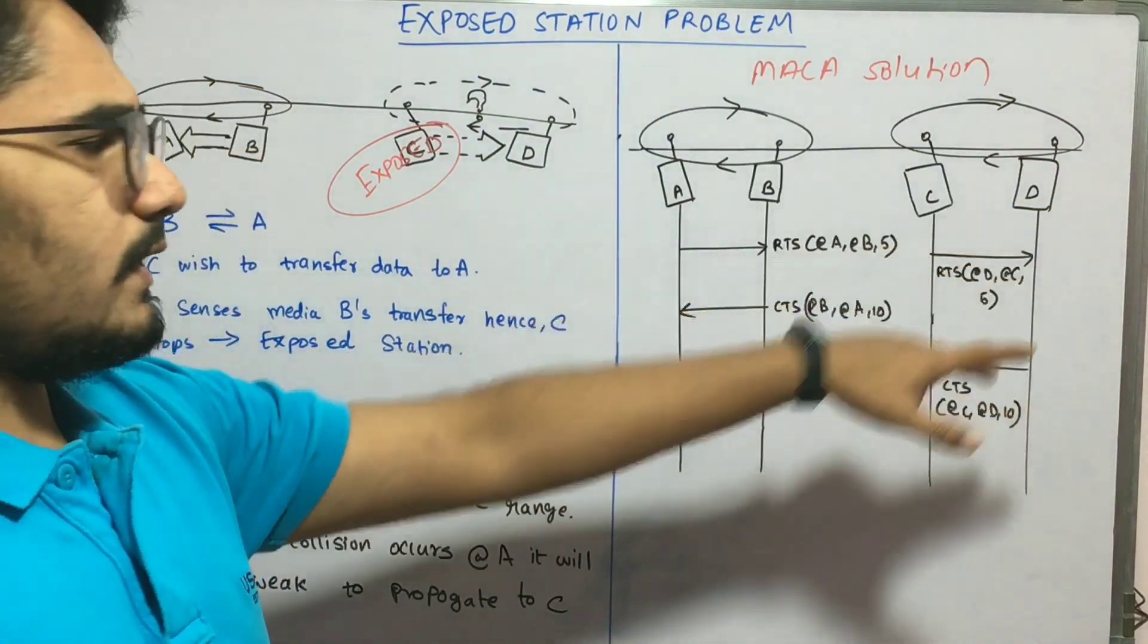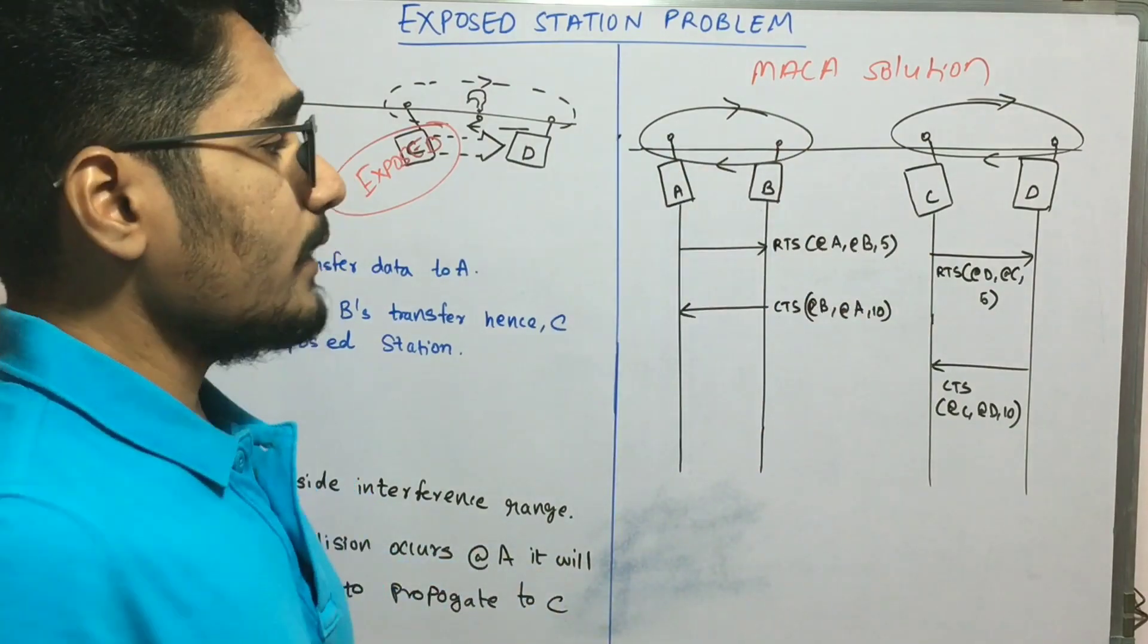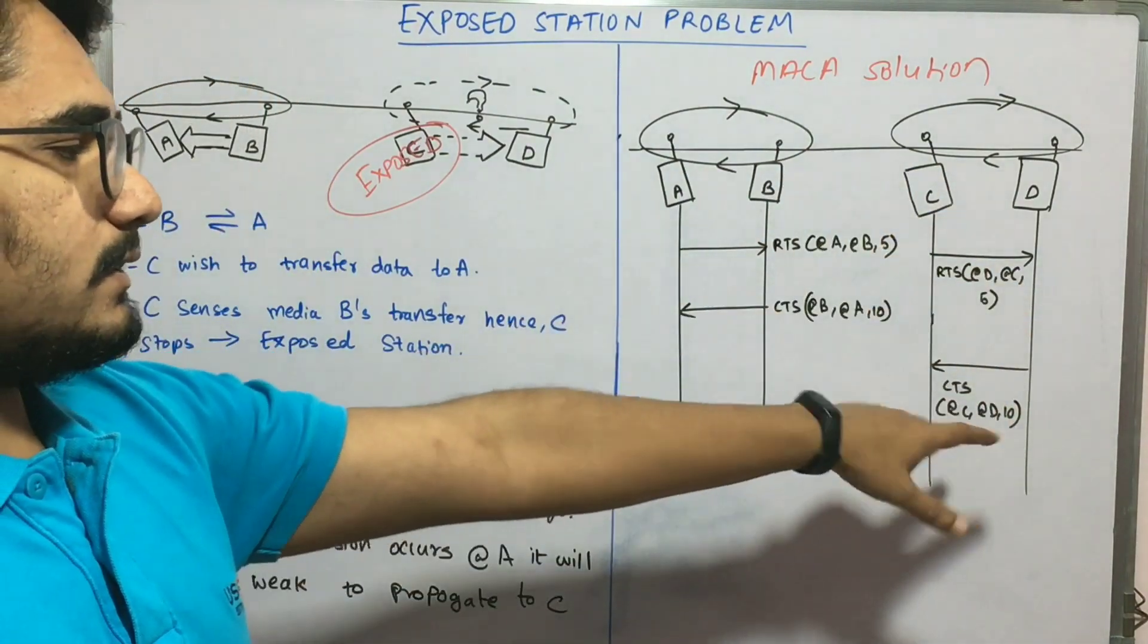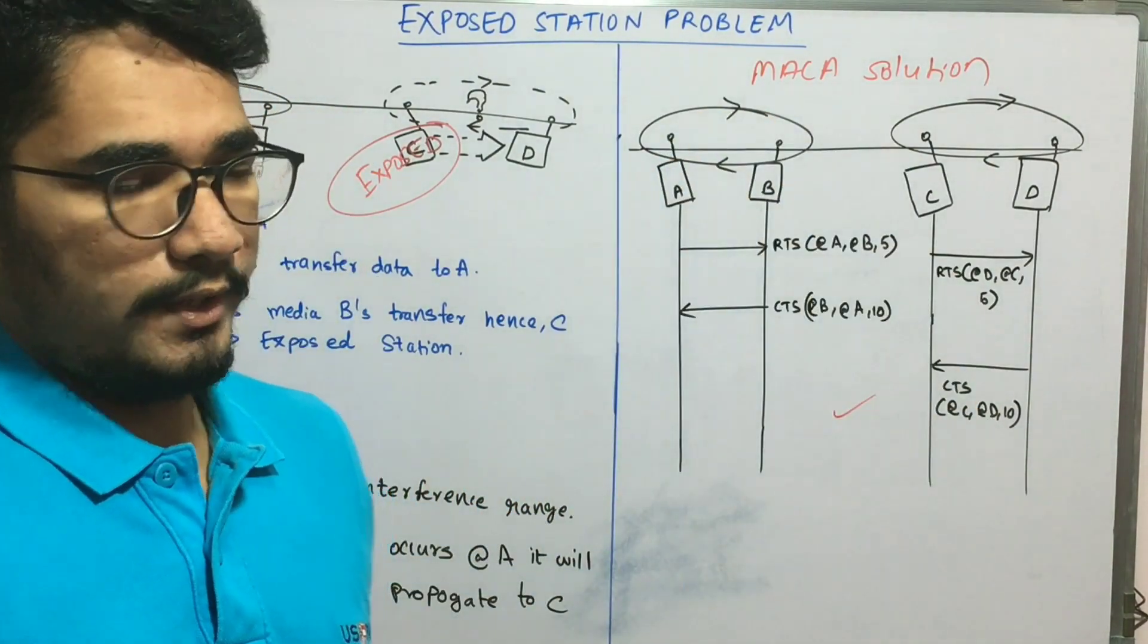Similarly, this applies to C and D. If C wants to communicate with D, he will give an RTS signal, and in response D will give back a CTS signal. Therefore, the transmission can occur and this problem can be avoided.